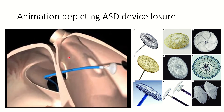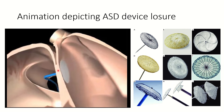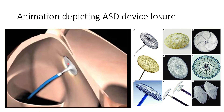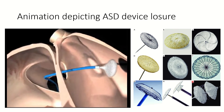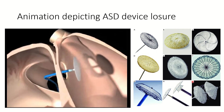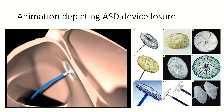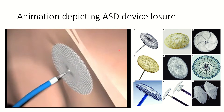This is an animation of ASD device closure. The catheter is introduced, the device is opened — this is the left atrium, the LA disc is opened first. After the LA disc is opened, the RA disc — the right atrial disc — is opened. The hole or ASD is closed with an umbrella-shaped device. After the device is in position, the screw is released and the device stays there permanently. Different companies make their own varieties of devices.